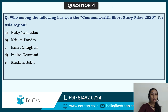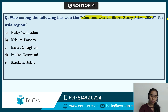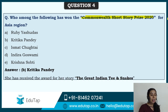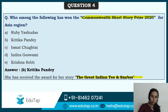Who has won the Commonwealth Short Story Prize 2020 for the Asia region? For the year 2020, the Commonwealth Short Story Prize has gone to Kritika Pandey. She received the award for her story 'The Great Indian Tea and Snakes' — not tea and snacks. She has written a short story which won her the Commonwealth Prize. This has also been covered in our current affairs lectures.